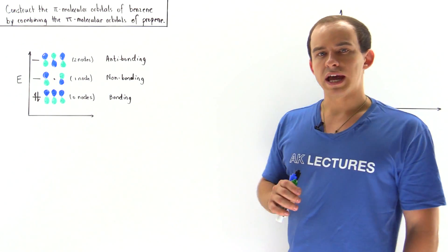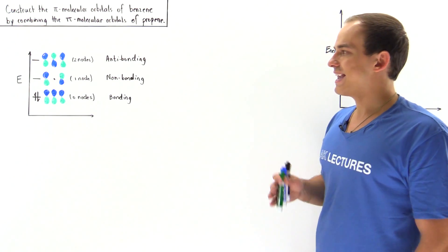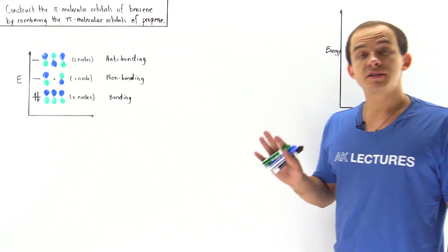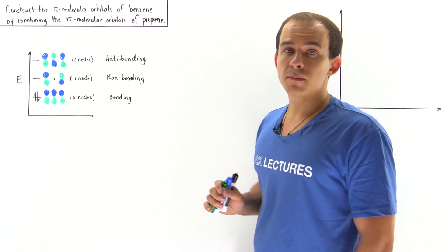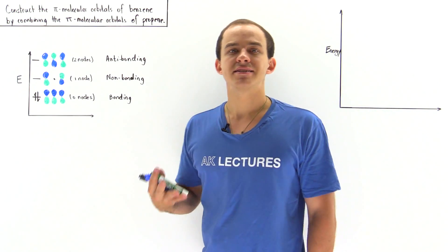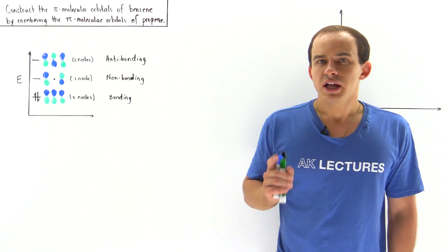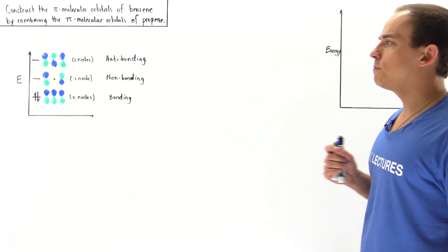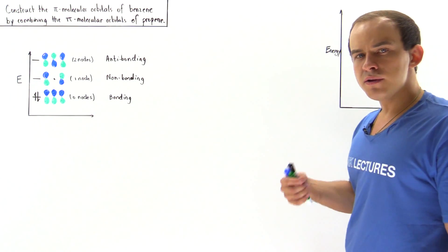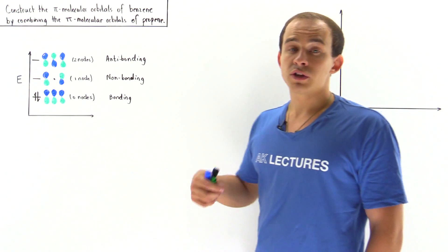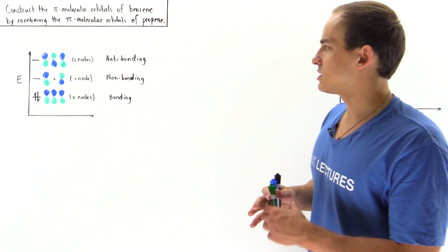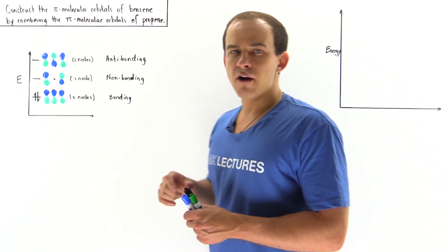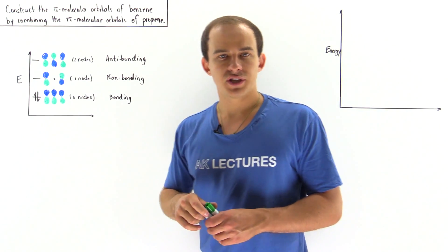Let's take a look at the following example in which we're going to construct the six pi molecular orbitals of the benzene molecule using the pi molecular orbitals of propene. The three pi molecular orbitals of the propene molecule are shown in the following energy diagram.